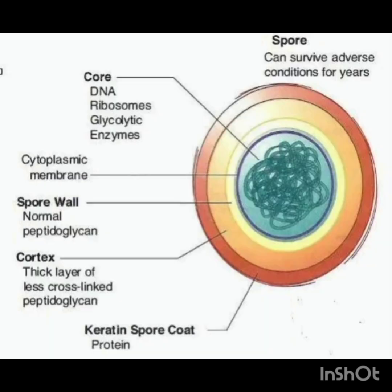An endospore is structurally and chemically more complex than vegetative cells. It consists of the following structures as shown in the image: exosporium, the outermost layer made up of protein; spore coat, which lies below the exosporium; and cortex, which lies below the spore coat and consists of loosely cross-linked peptidoglycan.